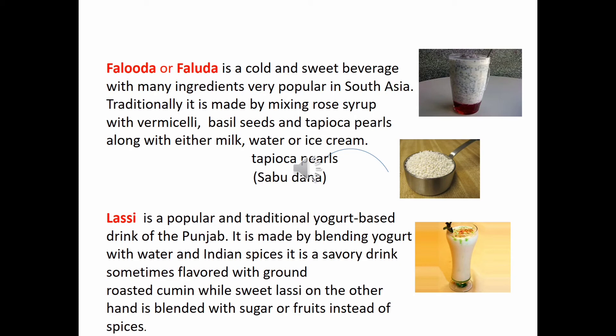Then faluda — it is a beverage traditionally made by mixing rose syrup, vermicelli, basil seeds, and tapioca pearls, along with milk or ice cream these days. Then lassi — people from this region are very fond of lassi. Especially in villages, some people start the day with lassi only; for some farmers, half a litre or one litre of lassi is their entire breakfast before going to the fields.